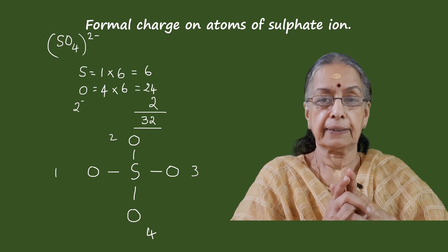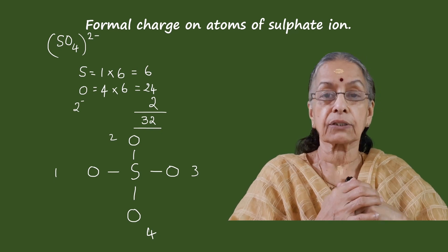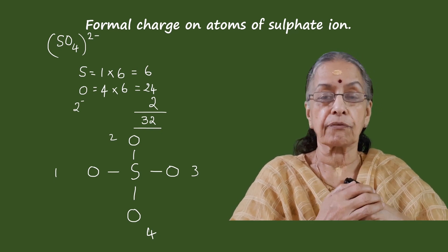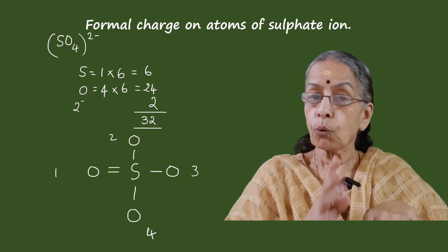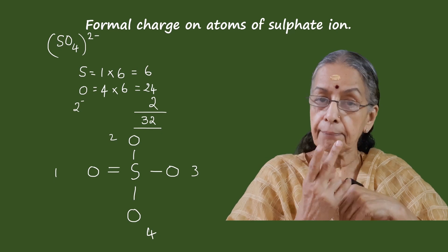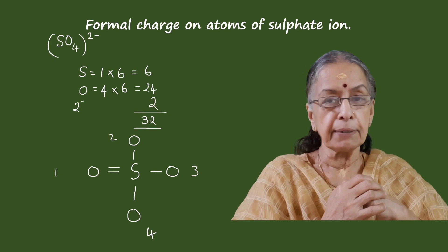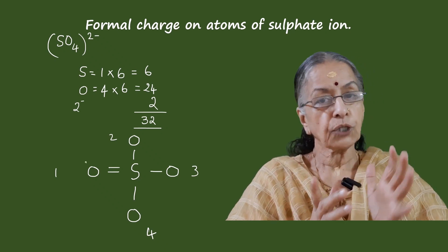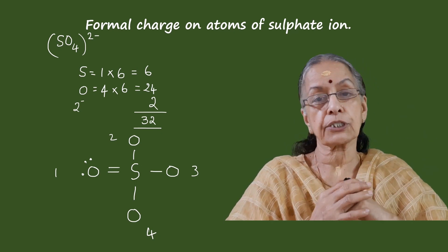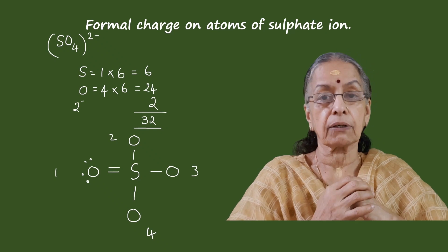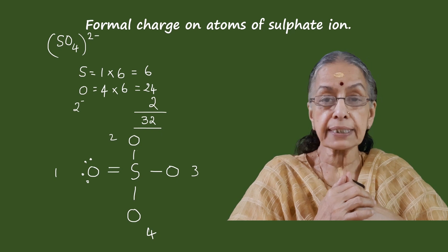For oxygen atom number one, there are only seven electrons including the electrons of the bond, but there should be an octet. It needs one more electron, so one of its electrons shares with another electron of the sulfur atom, forming a double bond. The octet is now completed for oxygen atom number one. Four electrons are shown in the double bond and the remaining four electrons remain as two lone pairs.